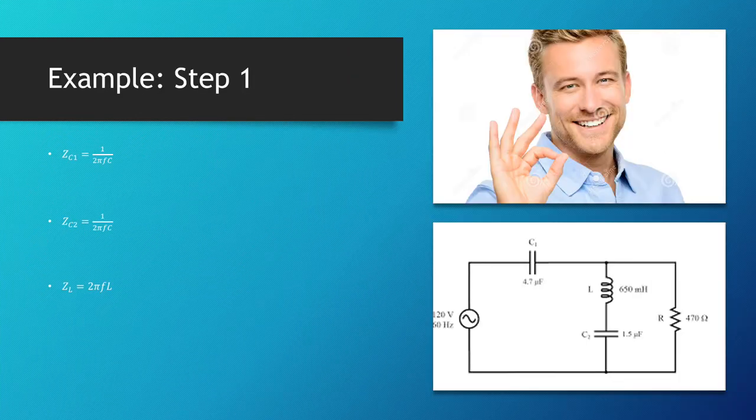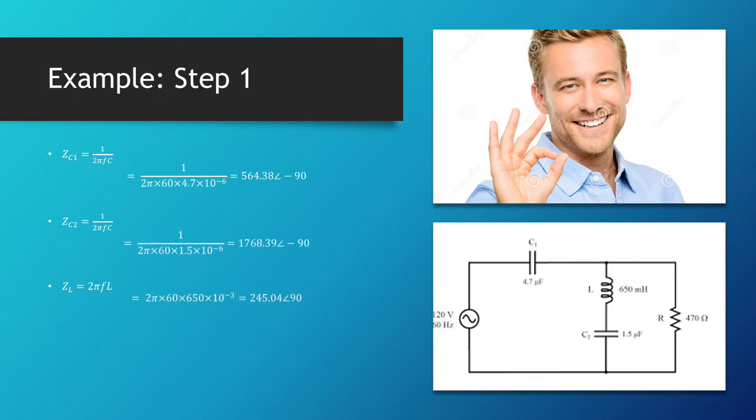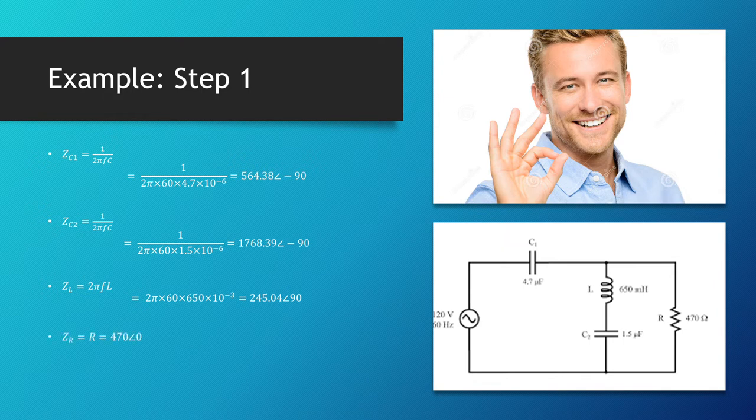For this first step, we can determine the impedance values of all the components using the impedance formulas. So for any capacitor, the impedance would be 1 over 2π times the frequency times the capacitance, and for inductors it's 2π times the frequency times the inductance. So we get values here with different types of direction. For any capacitor we'll always have a negative 90 direction, and for any inductor we'll always have a 90 direction, and for the final value of R it is just 470 with no direction.